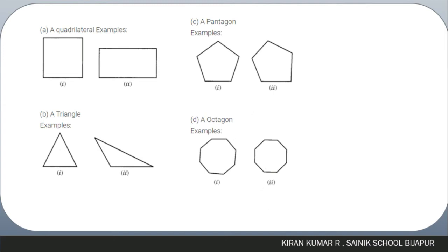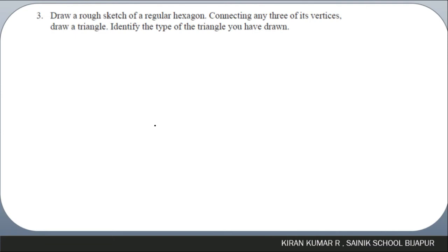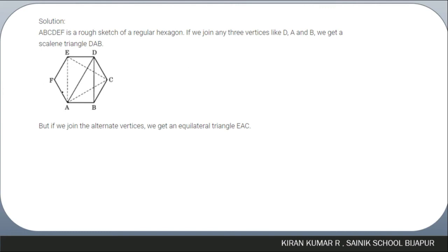Question three: draw a rough sketch of a regular hexagon ABCDEF and connect three of its vertices to draw a triangle. Connecting D, A, B forms a scalene triangle since all three sides are different. However, if you join alternate vertices of the regular hexagon, you get an equilateral triangle.